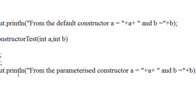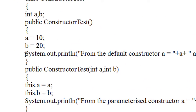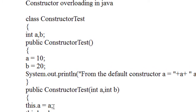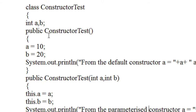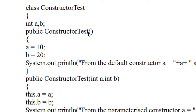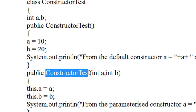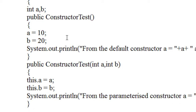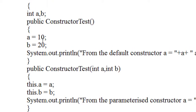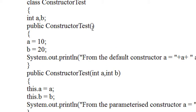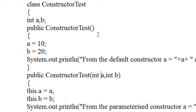I also print the values from the parameterized constructor. On the same class ConstructorTest, there are two constructors: the first one contains no arguments, and the second one contains two integer values. The difference is in the number and type of arguments — this is called constructor overloading.